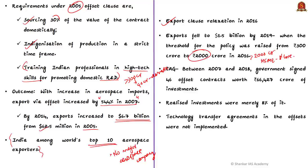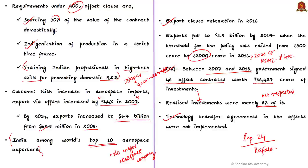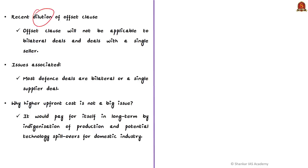As discussed previously, the recent CAG report mentioned that between 2007 and 2018, the government signed 46 offset contracts costing around 66,000 crores. However, realized investments were as low as 8%, meaning offset clauses are not being respected or honored by foreign companies. Technology transfer agreements in the offsets are also not being implemented. On September 28th, the government brought in new changes which have diluted this offset policy further.